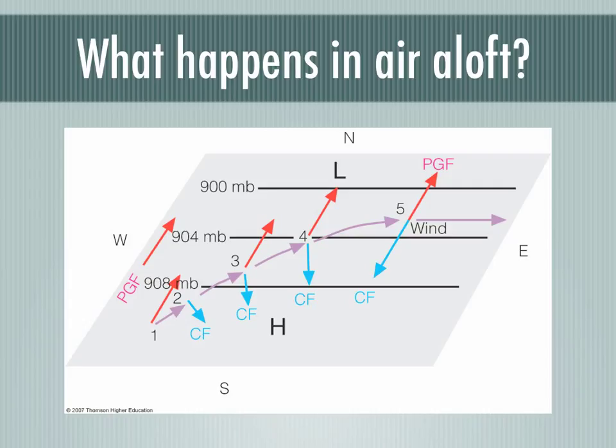Wind aloft is any measurement higher than 900 MB where there is no presence of friction. We can see in the chart there is pressure gradient force, known as PGF, Coriolis force, known as CF, and actual wind direction.